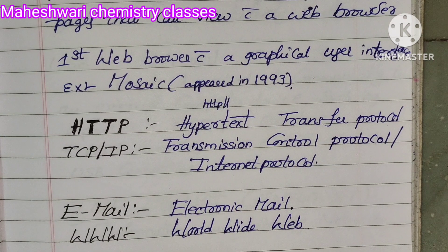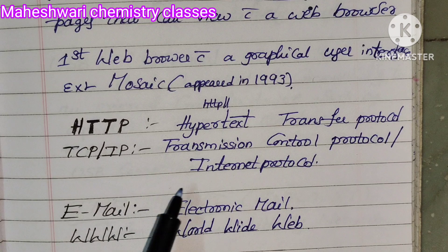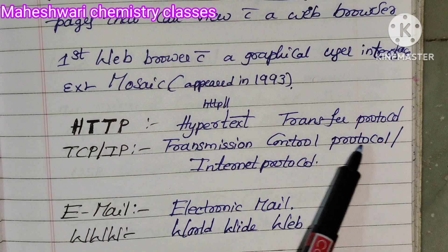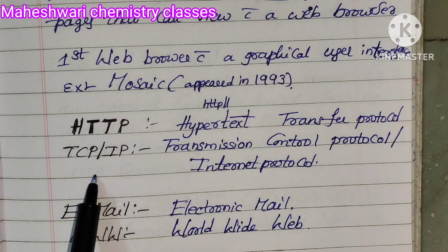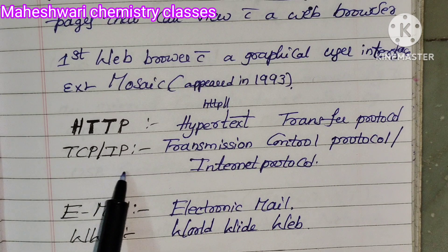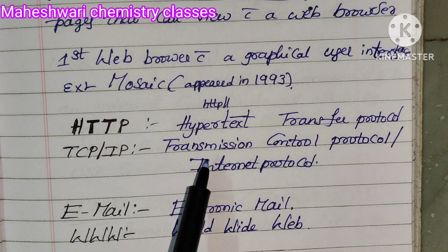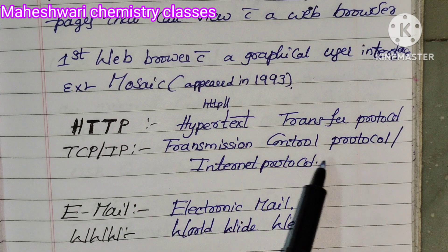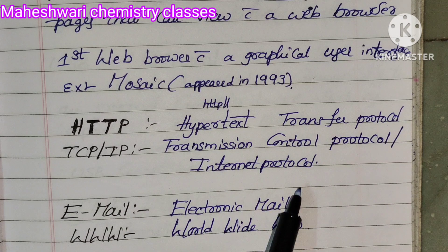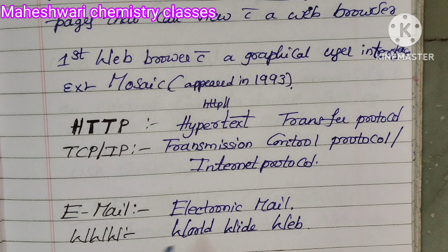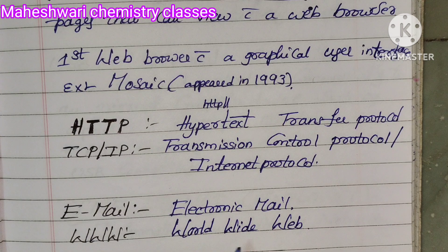Abbreviations: HTTP — Hypertext Transfer Protocol. TCP/IP — TCP is Transmission Control Protocol, IP is Internet Protocol. Email — Electronic Mail. WWW — World Wide Web.